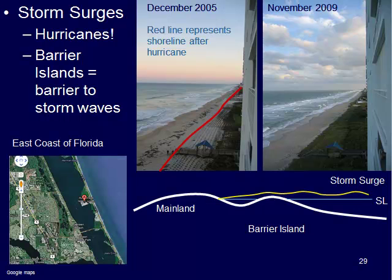Storm surges from hurricanes are very bad and can actually remove lots of sand from beaches. Here you can see pictures from the east coast of Florida on one of these barrier islands that acts as a barrier to storm surges, protecting the mainland from huge waves during hurricanes. In a December 2005 photograph, a red line indicates where the shoreline was right after a hurricane. They pumped and dredged sand from offshore to rebuild the beach, planted vegetation to re-stabilize the dunes, and by November 2009 the vegetation had filled right back in on those dunes.